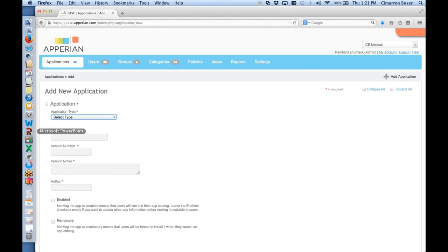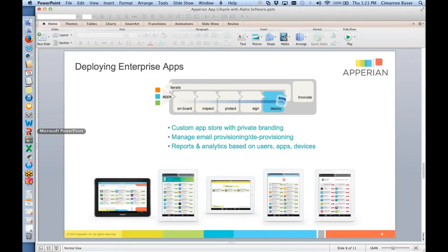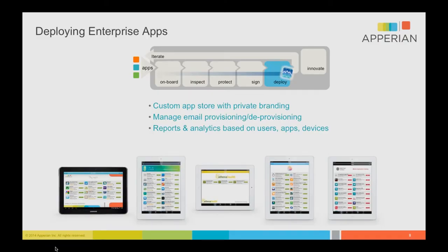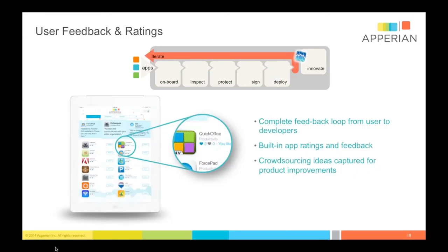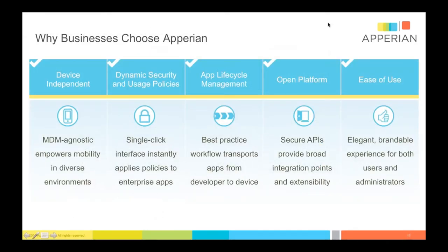Going back to the final slide — we've got a number of reasons why customers choose Appirian. I would say one of the biggest things we provide, besides device independence, dynamic policies, and lifecycle management, is really ease of use. A lot is said about ease of use, and I know Alpha really prides themselves on making a very attractive and easy-to-use solution. Philosophically we're very aligned with Alpha — we believe it has to be easy for developers, easy for administrators, as well as users, for the system to be successful.